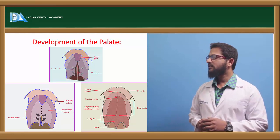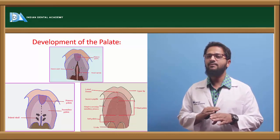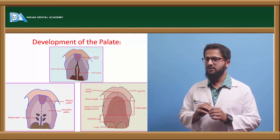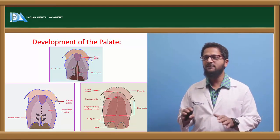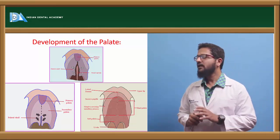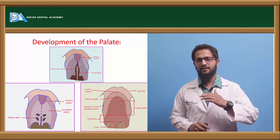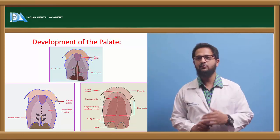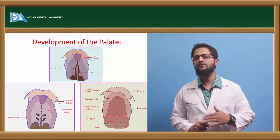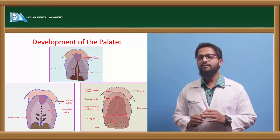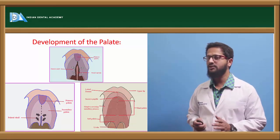By about seven and a half to eight weeks of intrauterine life, the palatal shelves are very close to each other. Finally, the epithelial cells between the two palatal shelves disintegrate and the mesenchymal cells of both shelves intermingle and fusion takes place. The fusion begins at the center and proceeds anteriorly and posteriorly. The posterior-most part of the palate remains un-ossified, developing into the soft palate. Complete ossification of the mid-palatal suture takes place at about 12 to 14 years of age.